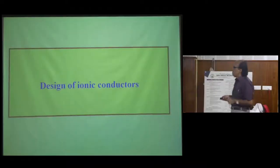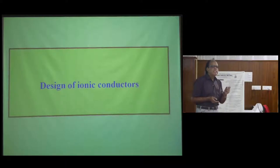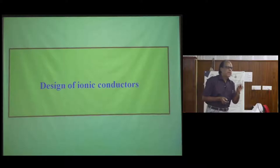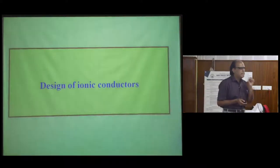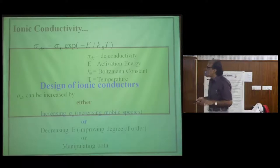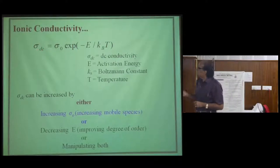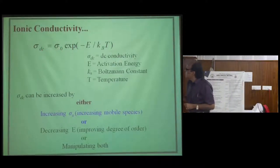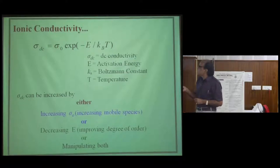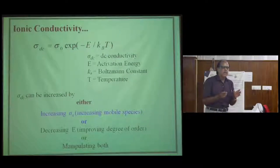I move forward to the second leg of my talk: design of ionic conductors. The challenge is: can we beat yttria-stabilized zirconia at lower temperatures? If yes, this will be very useful for SOFC technology. I am a hardcore solid state chemist, so let me start with textbook concepts. The Arrhenius formula is shown here. Ionic conductivity can be increased either by increasing σ0, the pre-exponential factor, or by decreasing the activation energy barrier. To increase σ0 you must introduce disorder in the lattice, whereas to decrease activation energy you must introduce order. These two are highly antagonistic properties.